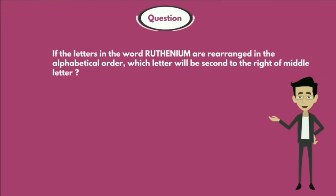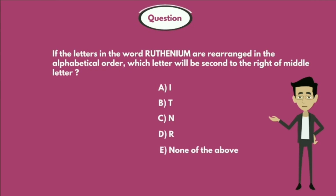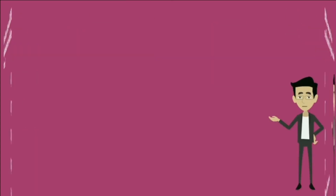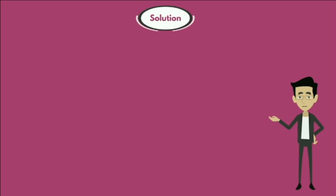If the letters in the word RUTHENIUM are rearranged in alphabetical order, which letter will be second to the right of the middle letter? Options are: Option A - I, Option B - T, Option C - N, Option D - R, and Option E - None of the above. Let's see the solution.